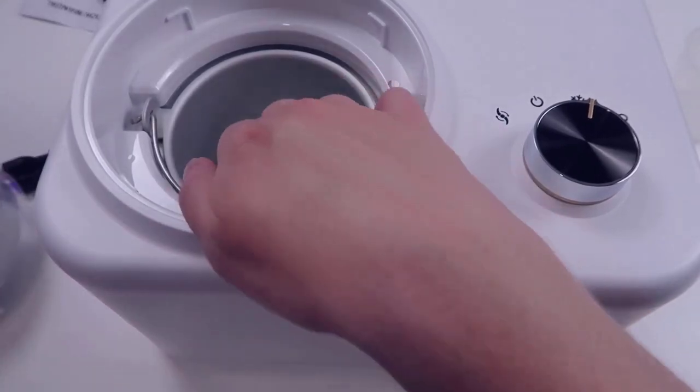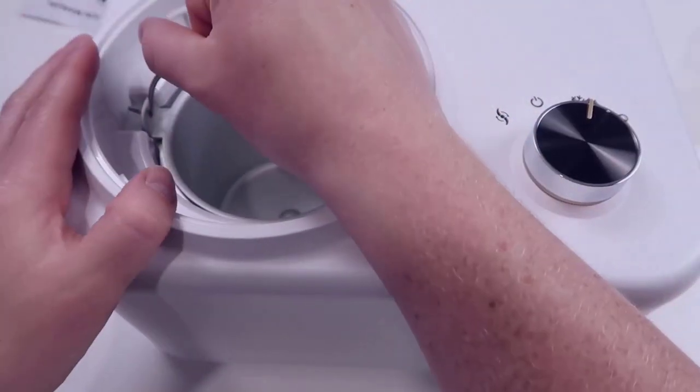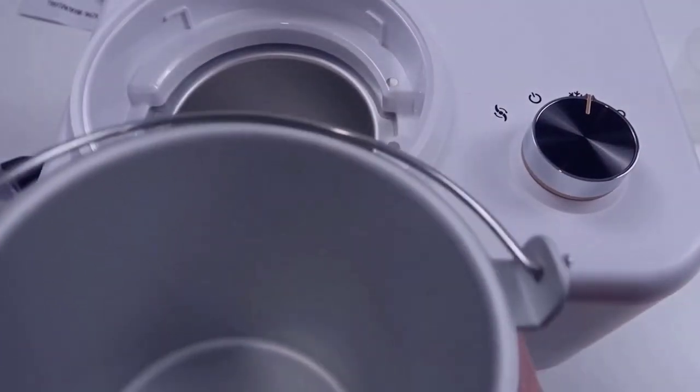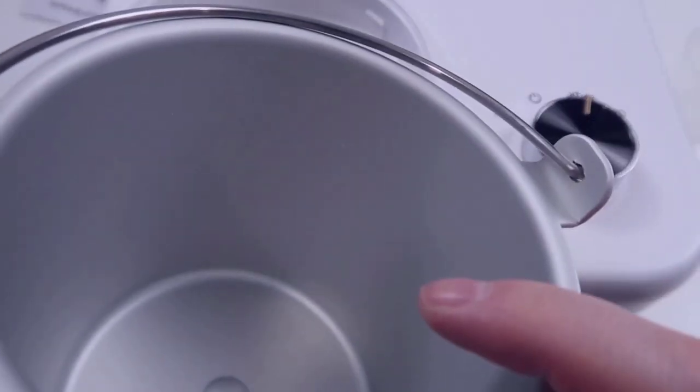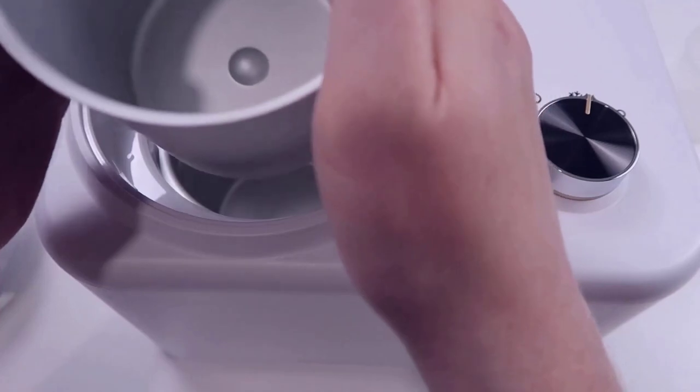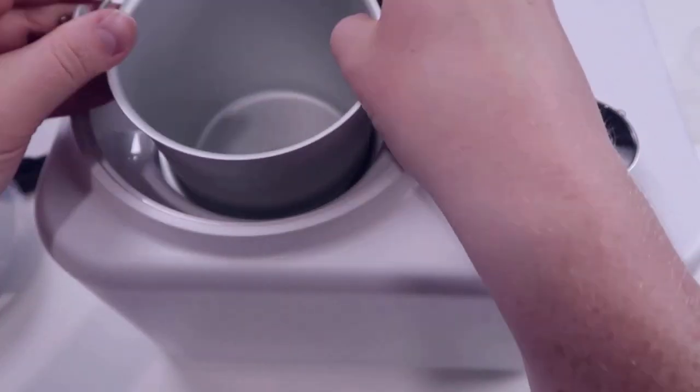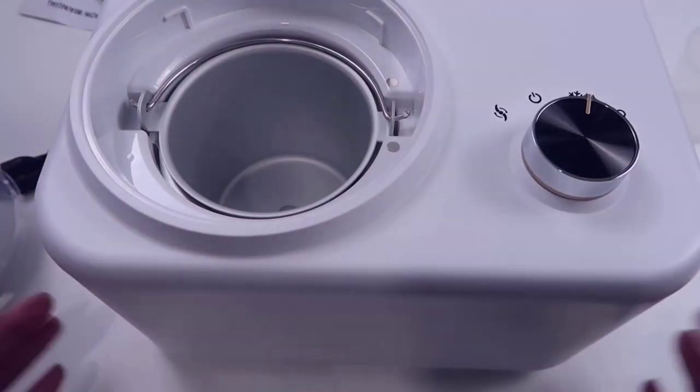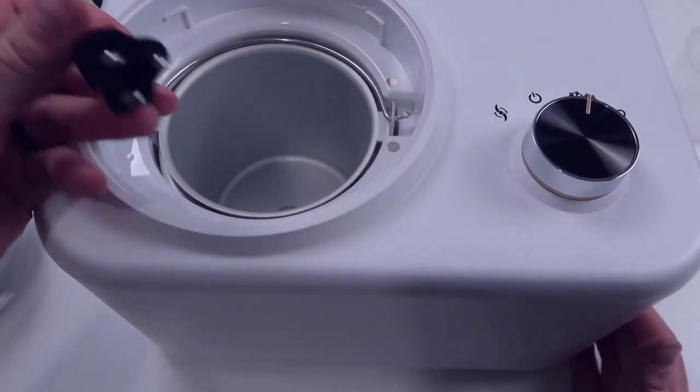When you're ready to load up your ice cream, you have a handle here. This will take a little bit of loosening, but this will completely come out. Now you can fill this with your ice cream mix and water and get this going. Once you're done, simply remove this, scoop out the ice cream, put it away in the freezer or start eating, and you're good to go.